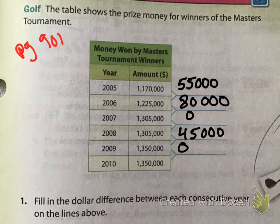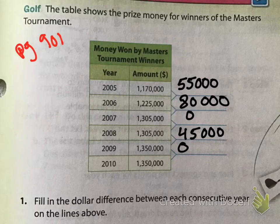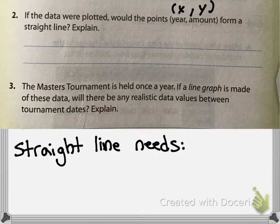Because here we went up $55,000, then to get to the next point we went up $25,000, then we went down $80,000, then we went up $45,000, then we went down $45,000. So there is no good way to graph this as a straight line.